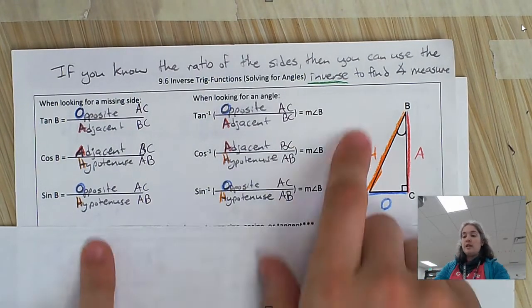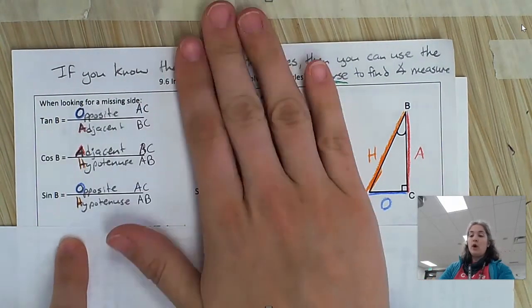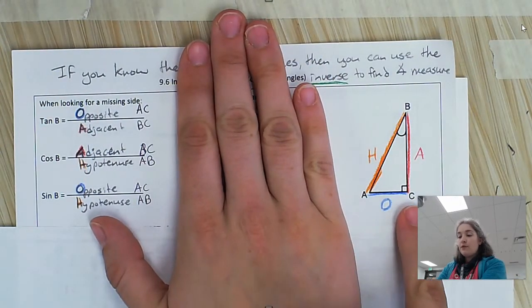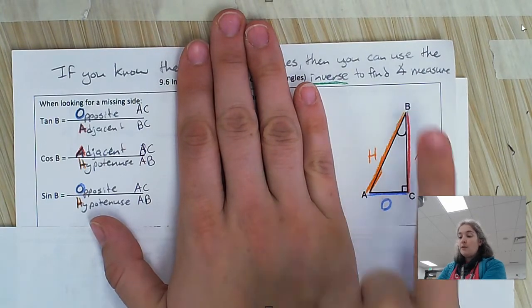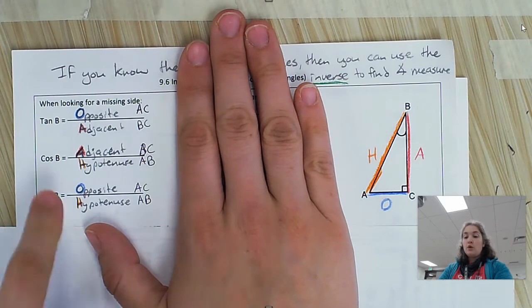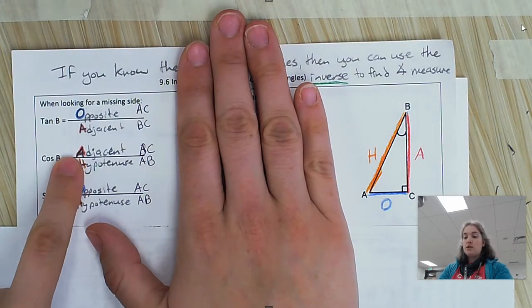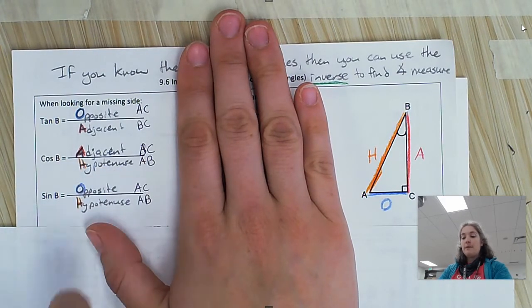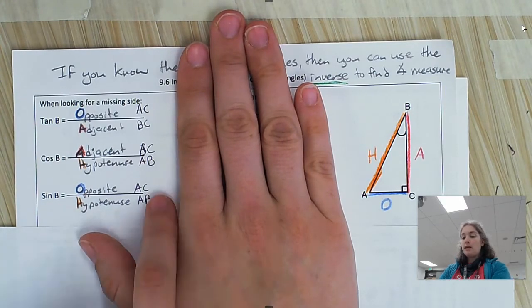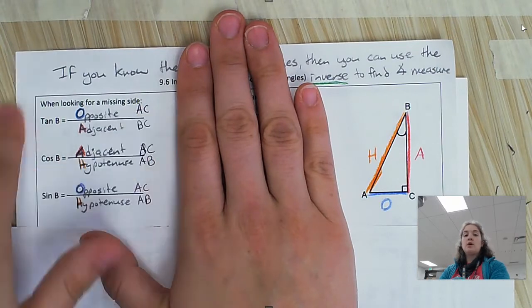So I do want to remind you, we know our tangent is opposite over adjacent. If we're looking at our little triangle here, that would mean that for tangent of B, that would be AC over BC. Cosine of angle B would be adjacent over hypotenuse, which would be BC over AB. And then sine for angle B would be opposite over hypotenuse, which is AC over AB.